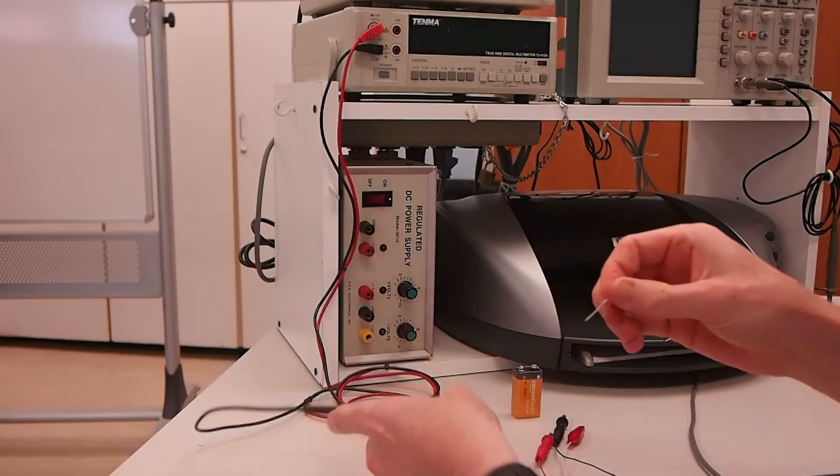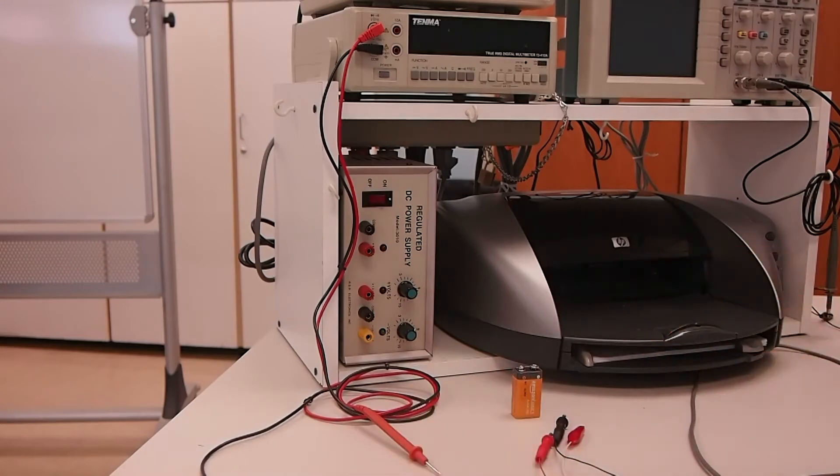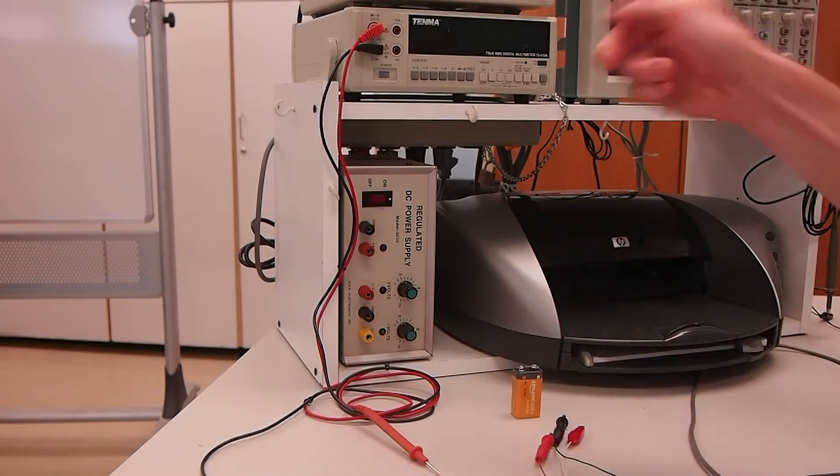In fact, this is a 330 ohm resistor, so 326 ohms is pretty close. Okay, so that's the multimeter.